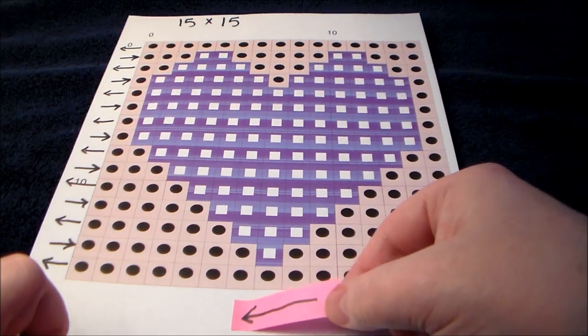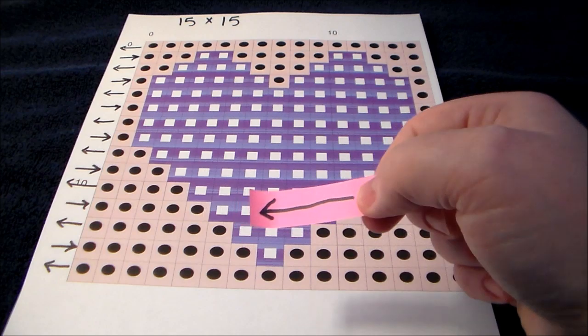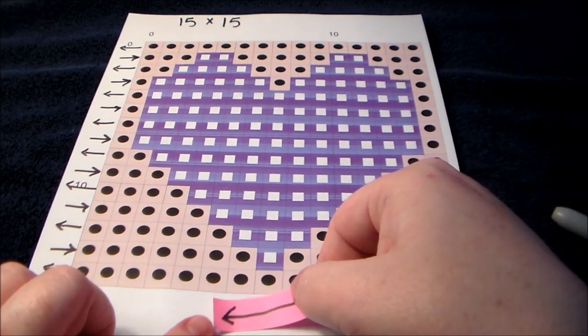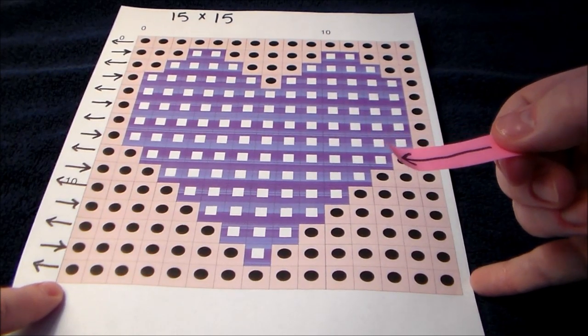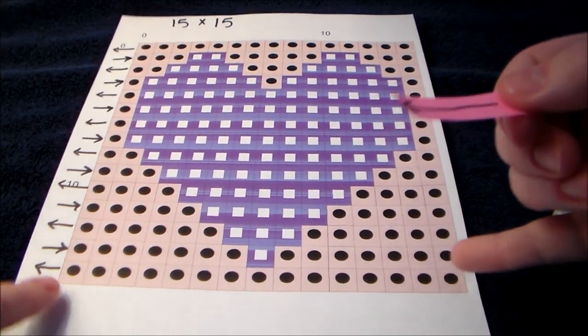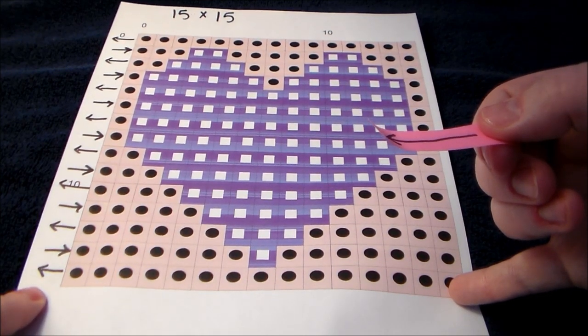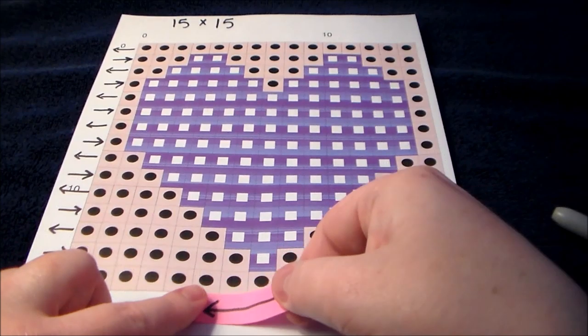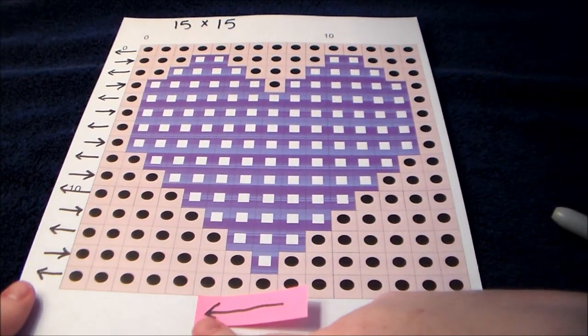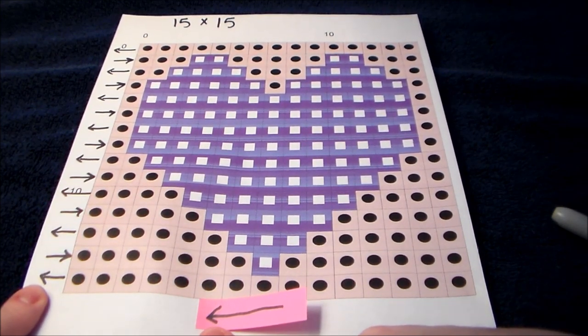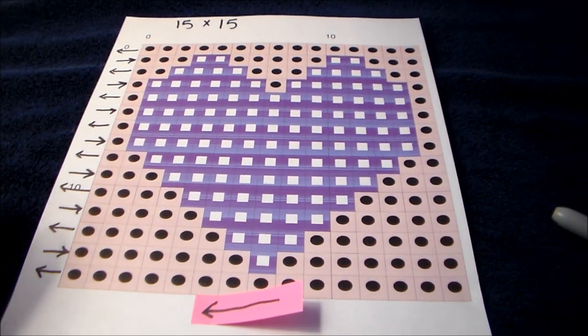Another step you can take is to use a post-it note. Just draw a little arrow on it and use that as you go along. So we are going to work on row one, and we know row one we're going to start with that stitch on the far right and it's going to work from right to left. So what we'll do is we'll put our little arrow below the row that we're working on and that gives us two visible identifications of what direction we should be going.